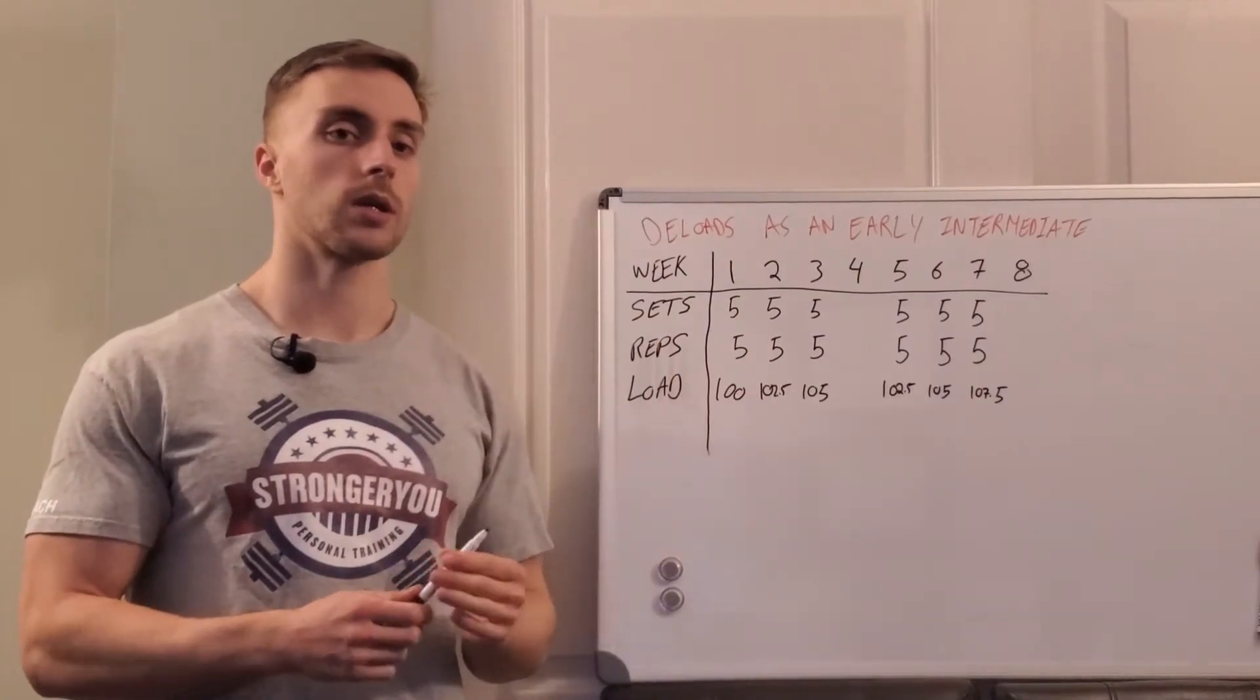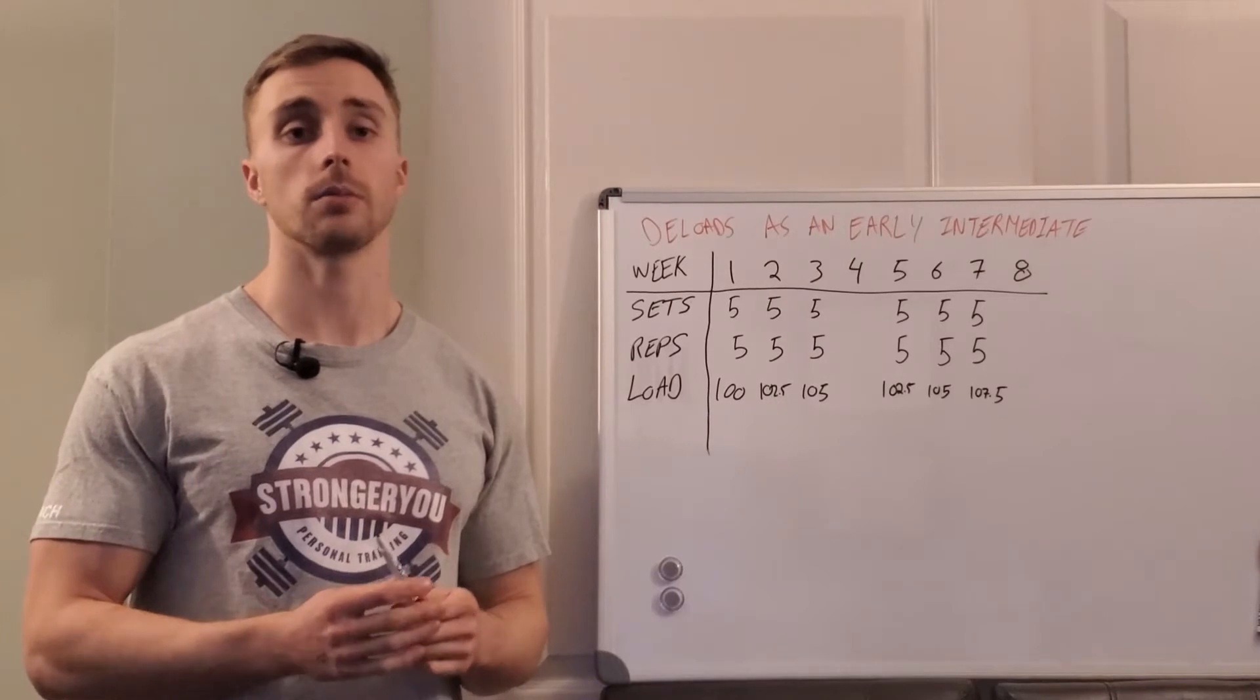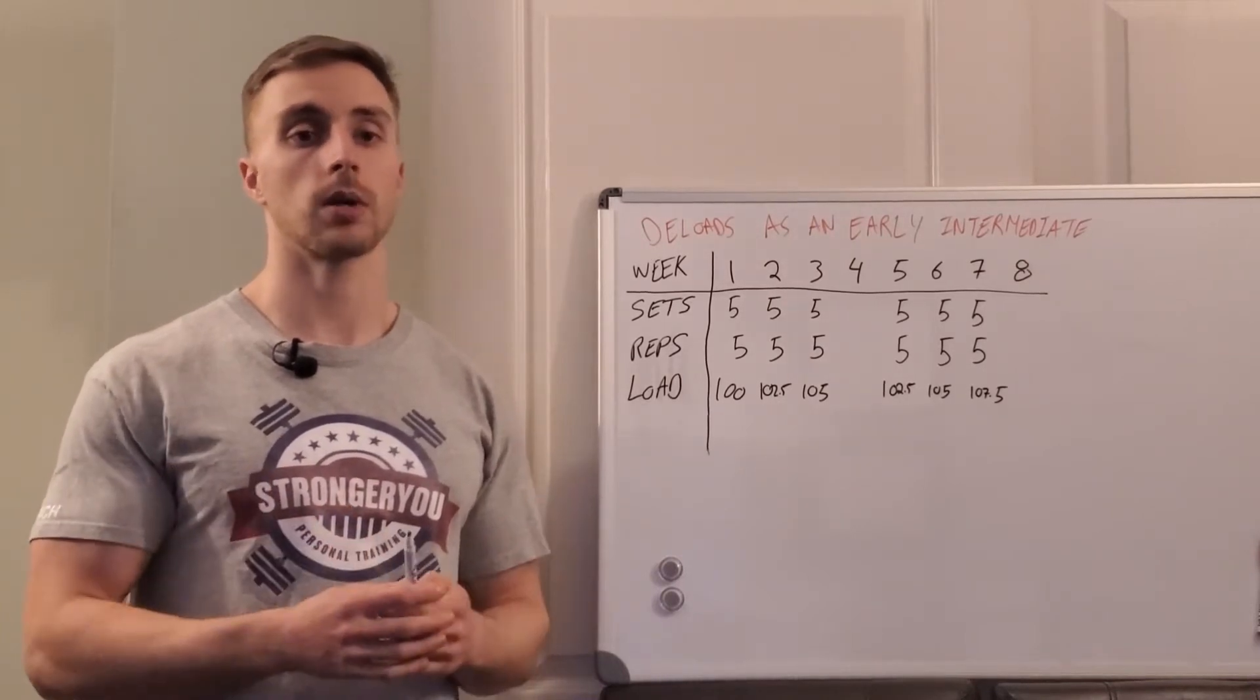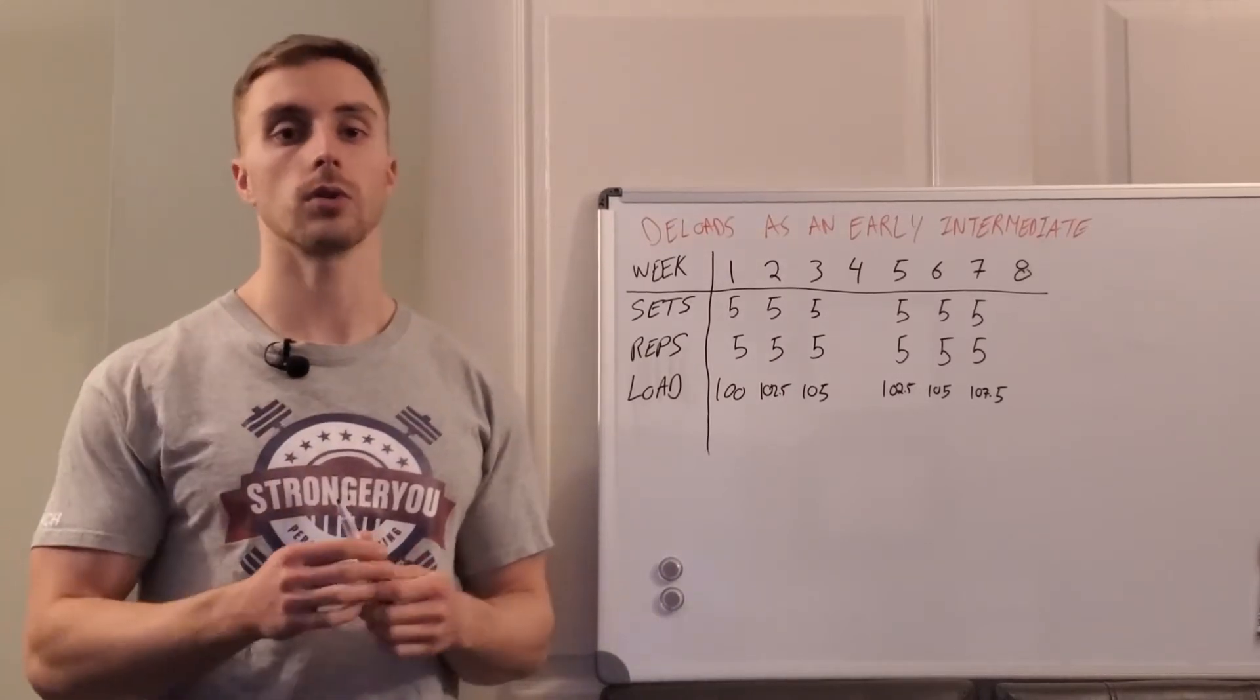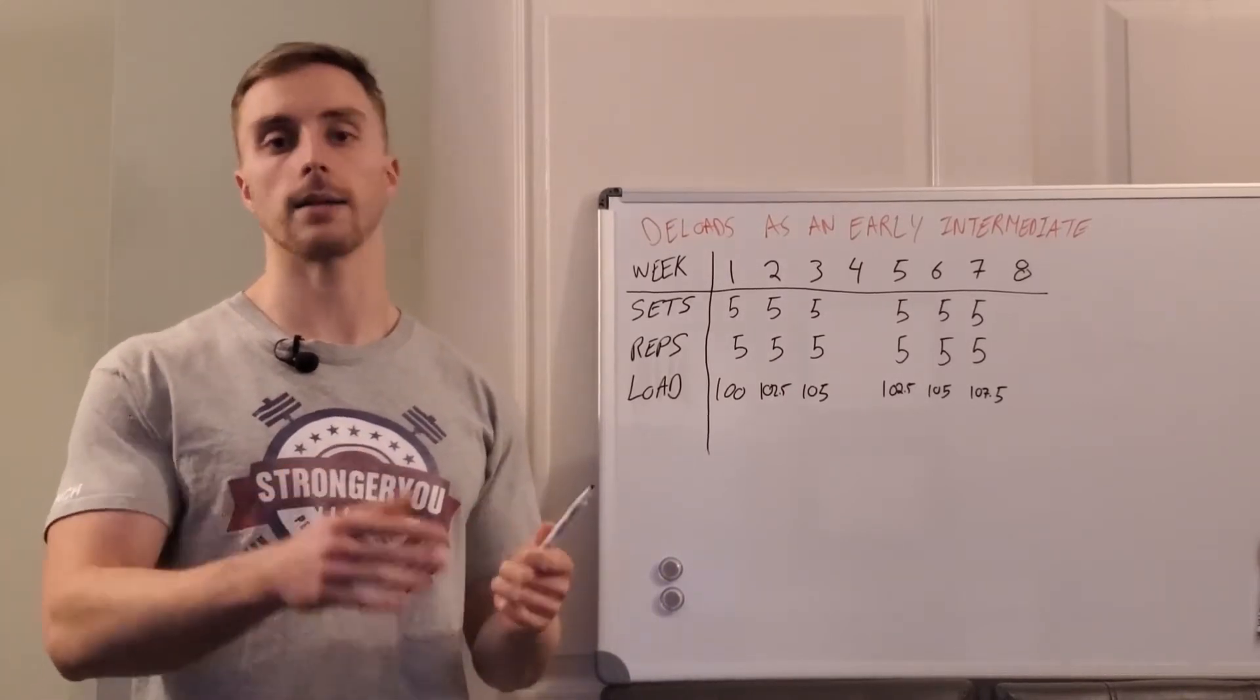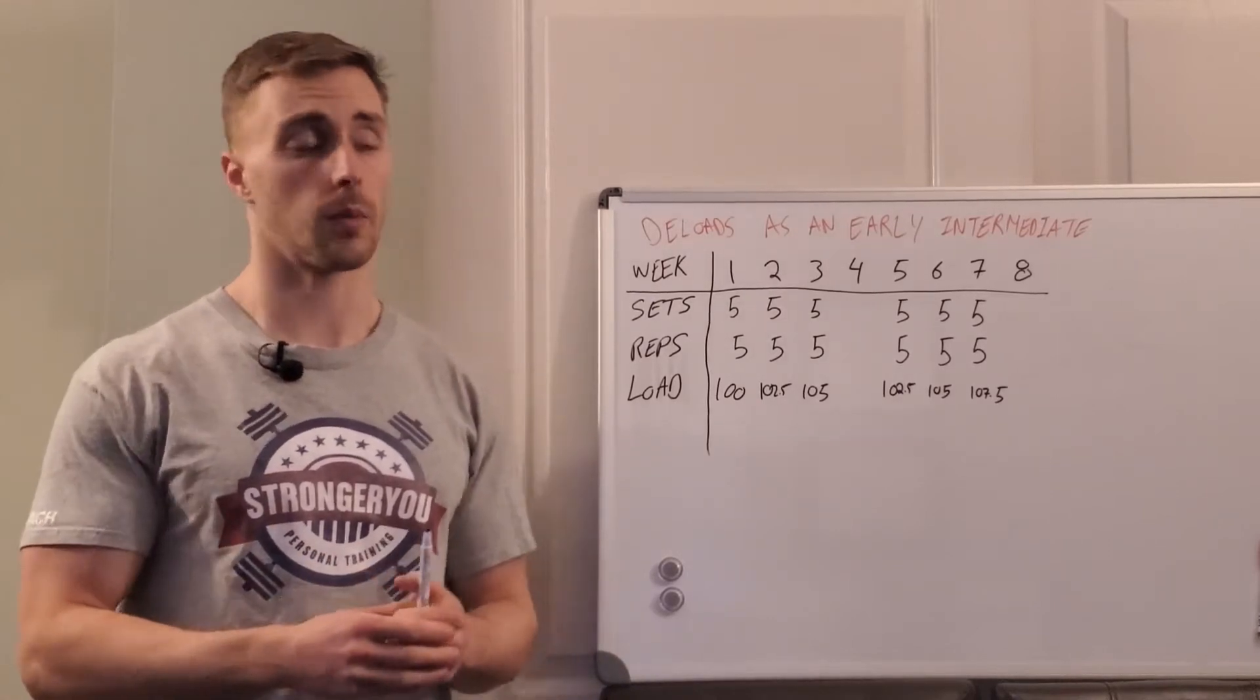As you start to progress with this you'll find it's harder and harder to add even two and a half kilos a month to your bench press, and the next step is to start incorporating a little bit more undulation in how much volume you're using in training. As we progress as lifters we need to factor recovery into your training and manage that fatigue a little bit better.